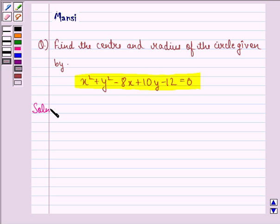So let us start with the solution to this question. Now the equation of the circle given to us is x squared plus y squared minus 8x plus 10y minus 12 equal to 0.